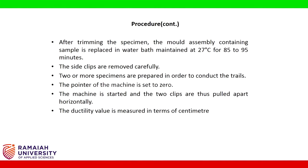After trimming, the mold assembly containing the sample is replaced in a water bath maintained at 27 degrees Celsius for 85 to 95 minutes. The side clips are removed carefully and two or more specimens are prepared in order to conduct the trials. The machine is set to zero, started, and the two clips are pulled apart horizontally. The ductility value is measured in terms of centimeters.